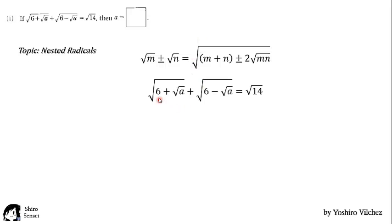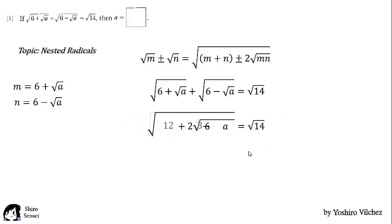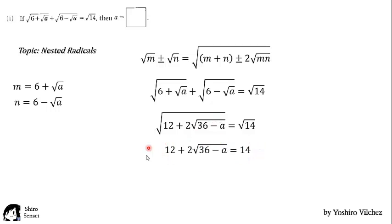So for this problem, let it be square root of 6 plus square root of a and square root of 6 minus square root of a. Apply the identity, we have this expression. Cancel out the square root of a and this product is a difference of squares. So simplifying it, cancel out the square roots and we get a simple equation, which the value of a is 35.